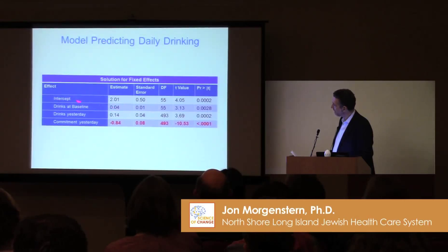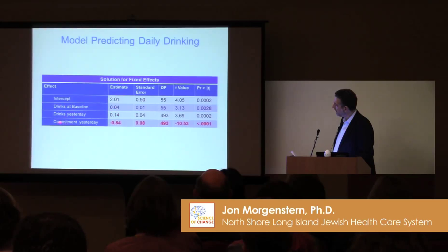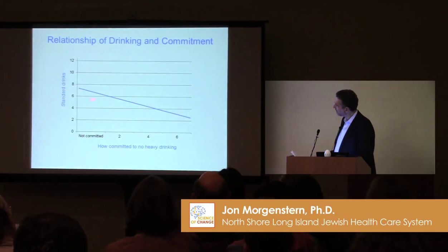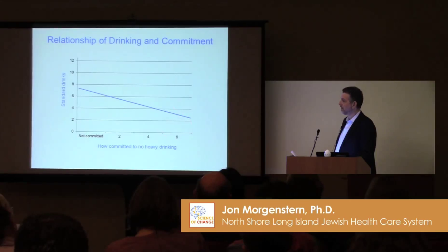This is the simplified model with just the predictors. Today's drinking, even after controlling for drinking at baseline and drinking yesterday, shows that yesterday's commitment is significantly related to today's drinking. From a causal point of view that's quite impressive. And this is not just at a group level — it's at an individual level. People low in commitment are, on average, drinking about eight standard drinks a day, while people high in commitment are drinking more like two or three drinks a day. That's meaningful clinically.